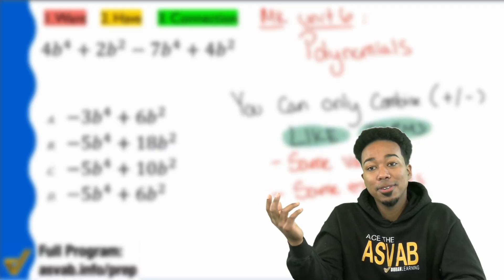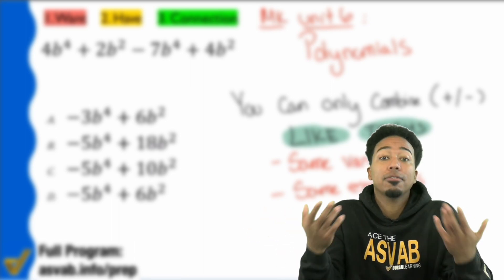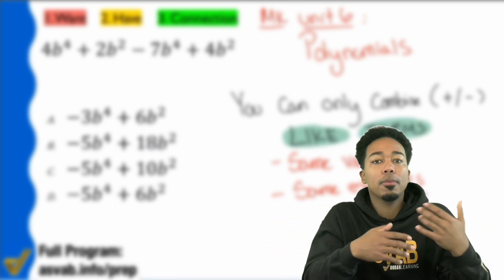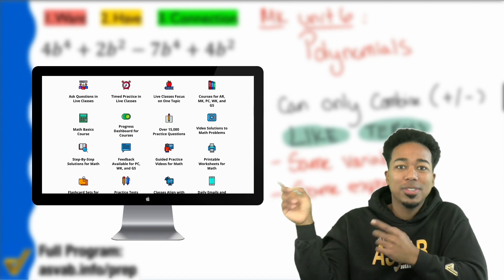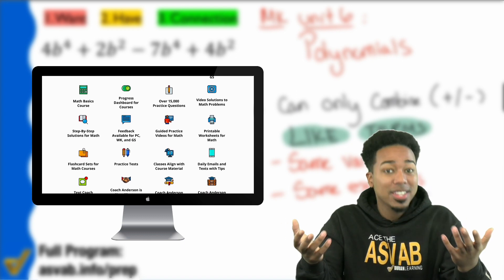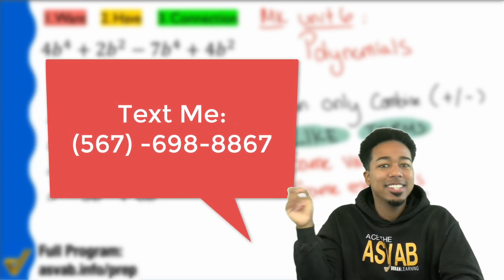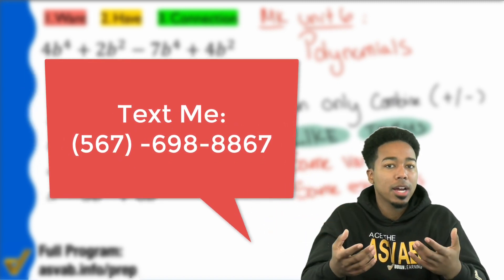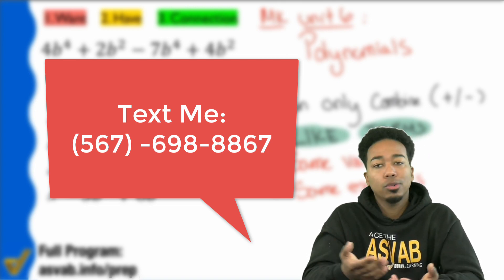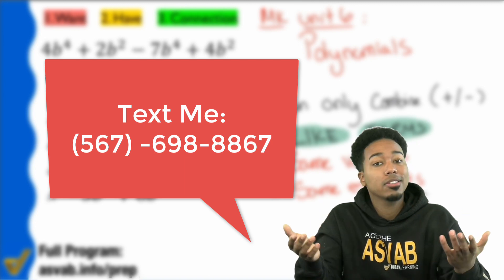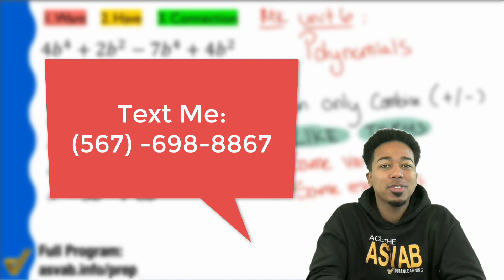And so making it this far in this video, I'm going to go ahead and say it's safe to assume that you like the way I teach. And that's the truth for a lot of folks here. So if you want to learn more about my program, where you can get all of my practice questions, including 15,000 that will help you succeed with step-by-step solutions, a lot of them having video solutions, then go ahead and reach out to me. My phone number is 567-698-8867. Go ahead and reach out to me. That way you're not stuck in the same loop that so many people are stuck in with retaking the ASVAB over and over again when the solution to getting a higher score is right here in front of your face. Again, go ahead and text me, ask me about my full program or click the link in the description to learn more about it.